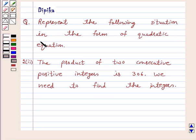Represent the following situation in the form of a quadratic equation. The product of two consecutive positive integers is 306. We need to find the integers.